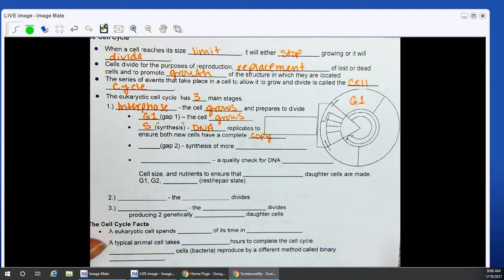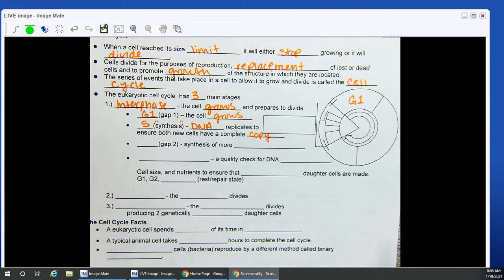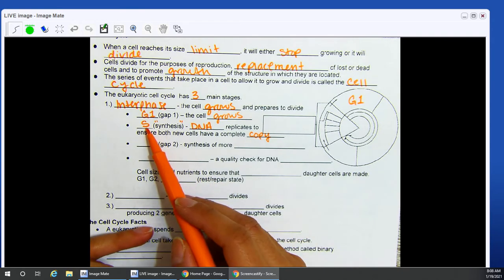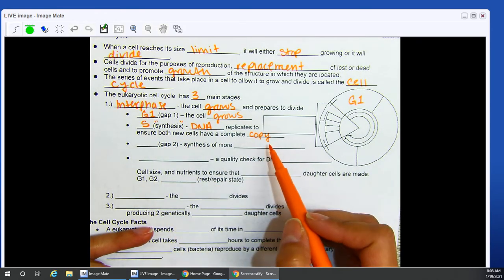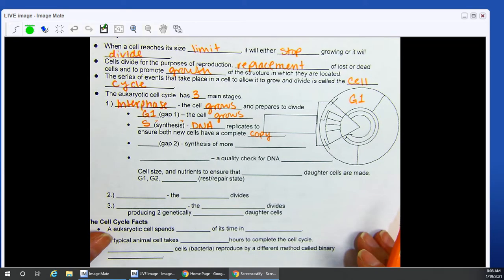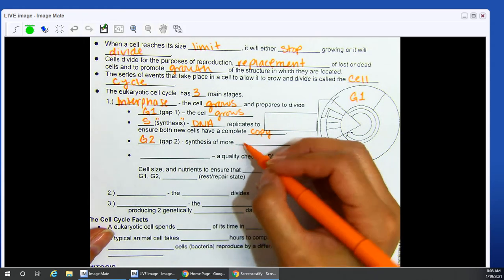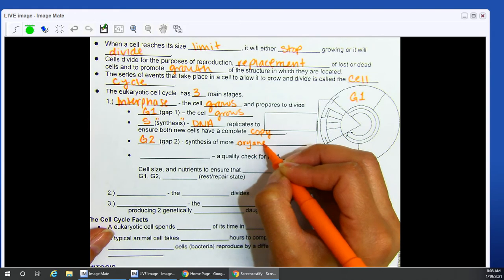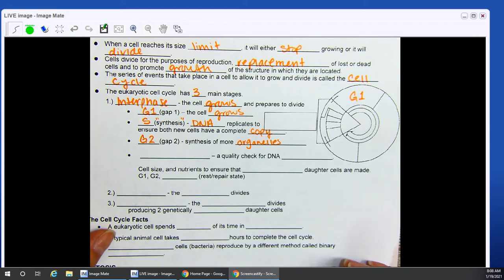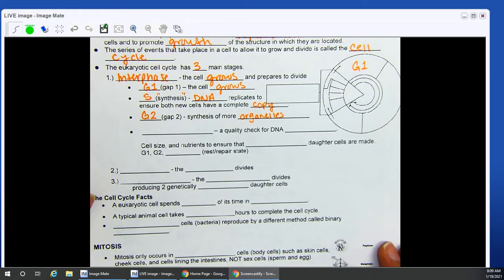This makes a lot of sense. If I make a whole new cell, because this cell cycle is for cell division, if my cell is nearing the end of its life and I need to replace it with another one, well, if I only give it half of its instructions, that cell is not going to be successful. So we need to make sure that during S phase, that DNA is copied, so that your new cells that are made after cell division have a complete understanding, a complete copy of what they need to do. G2, also known as gap 2, synthesis of more organelles.